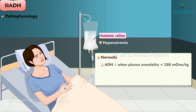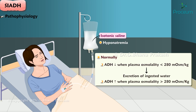In normal individuals, plasma antidiuretic hormone levels are very low when the plasma osmolality is below 280 milliosmoles per kilogram, thereby permitting the excretion of ingested water. Antidiuretic hormone levels increase progressively as the plasma osmolality rises above 280 milliosmoles per kilogram.